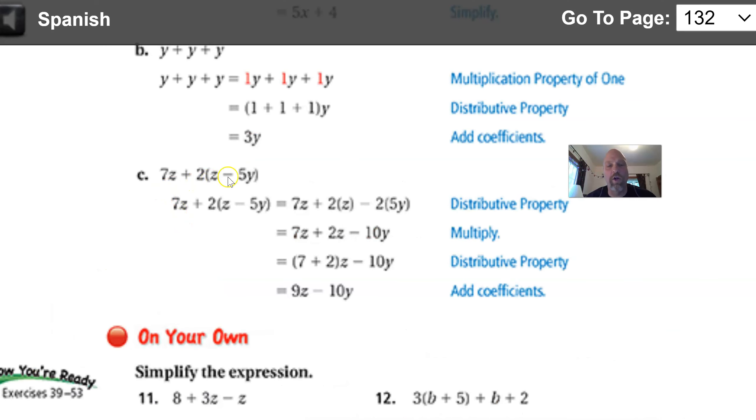This is the last one I wanted to show you, example c, because you see how it gets complex. Please excuse my dear Aunt Sally. What do I need to do first? There's no - well, there's parentheses, (z - 5y). But I don't know what that is, because I don't know what z is or 5y. So I'm going to use the distributive property. You see here, 2 times z, 2 times 5y, 7z plus 2z minus 10y. 10 times y is 10y. And so in the end, I just add the coefficients. I got 7z plus 2z is 9z minus 10y.